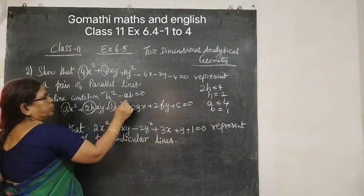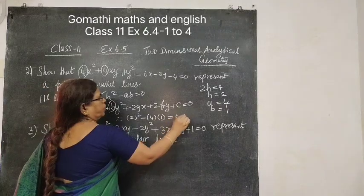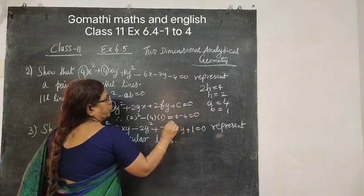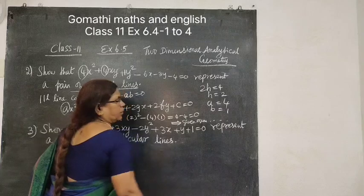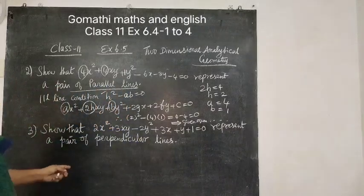Now you substitute here. H squared equal to 4, AB is 4 times 1 equals 4, so 4 minus 4 equal to 0. Which implies here is a pair of straight lines.